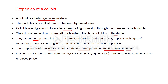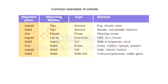The components of a colloidal solution are the dispersed phase and the dispersion medium. These can be compared with a solution: solute corresponds to the dispersed phase, and solvent corresponds to the dispersion medium. Colloids are classified according to the physical state — solid, liquid, or gas — of the dispersing medium and the dispersed phase, giving eight categories.